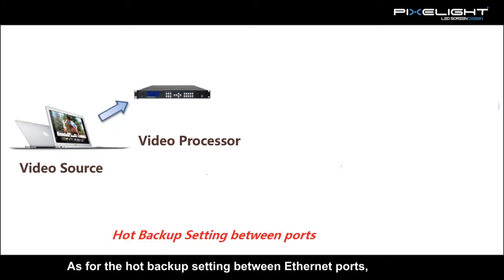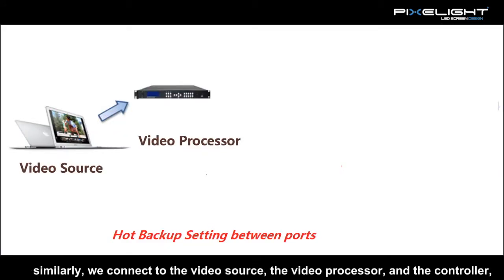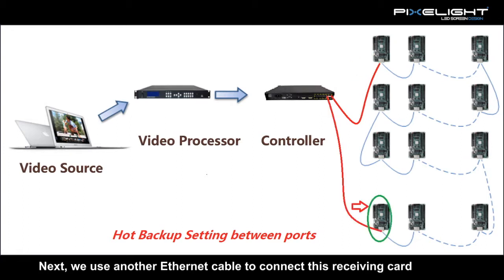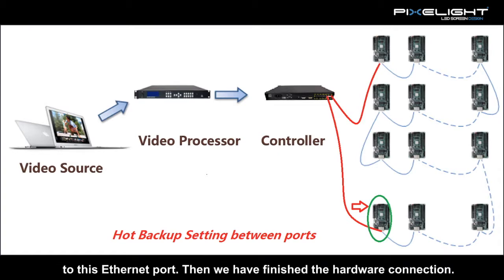As for hub backup setting between Ethernet ports, similarly connect the video source, the video processor, and the controller. Then use one Ethernet cable to connect one Ethernet port to the receiving card. Next, use another Ethernet cable to connect that receiving card back to a second Ethernet port. The hardware connection is now finished.